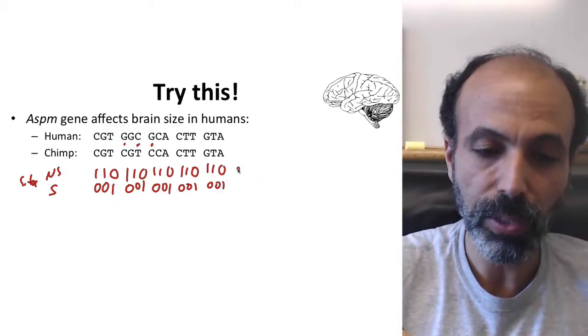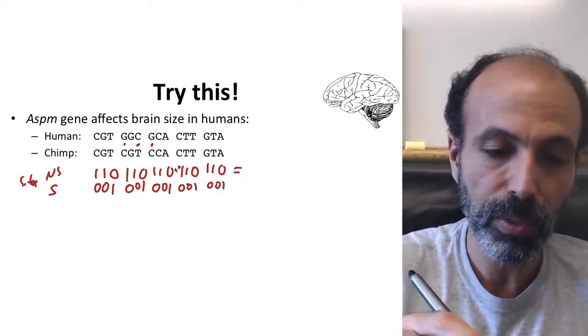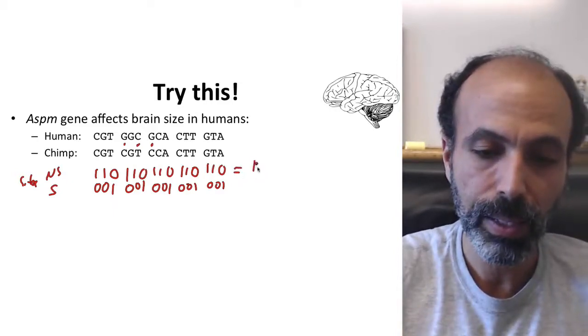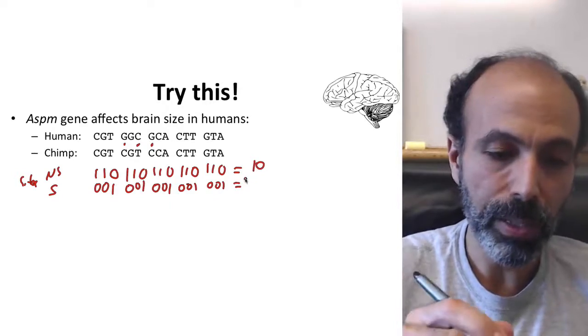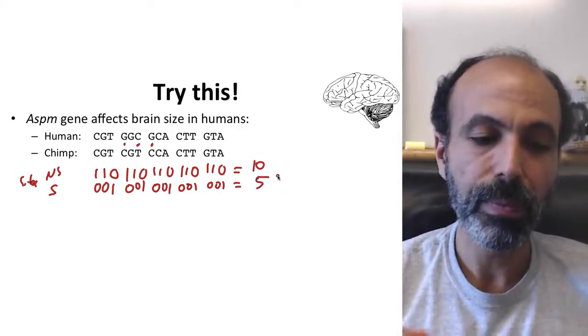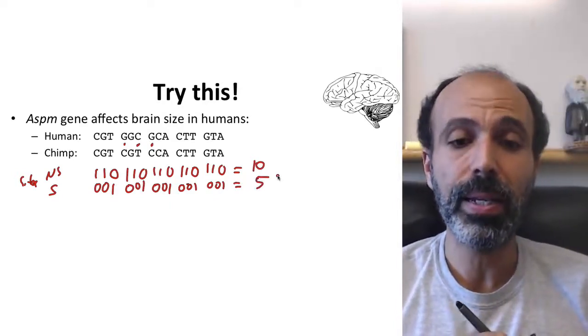So these are the sites, and we look at the actual changes. Well, actually, let's total these up first. In terms of non-synonymous sites, there's 1, 2, 3, 4, 5, 6, 7, 8, 9, 10. For synonymous, there's 1, 2, 3, 4, 5. So, we have 5 synonymous sites, 10 non-synonymous sites. When we look at changes, we have 2, this one and this one, that are non-synonymous.